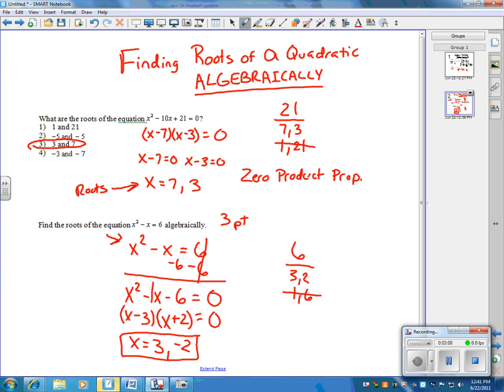For this question, it was a three-point question. You get one point for writing your equation, a second point for factoring, and then a third point, the final point for showing your roots.